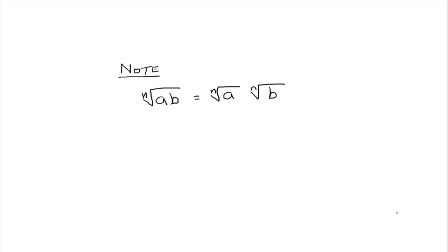In this video I would like to talk about multiplying radicals. To begin, let's refresh our memory on when we were simplifying radicals. In a previous note, we had the nth root of a times b. We could rewrite that as the nth root of a times the nth root of b, and that's what allowed us to simplify radicals in a previous video.